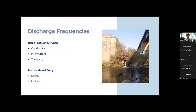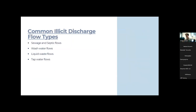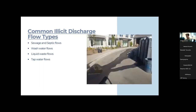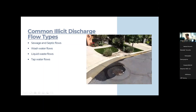There are four common flow type categories for illicit discharges. First: sewage and septic flows — a high rate of illicit discharges come from these. One example was a sanitary sewer overflow in a residential neighborhood caused by FOG (fats, oils, and grease) backed up from a nearby hotel that hadn't cleaned their grease tanks.